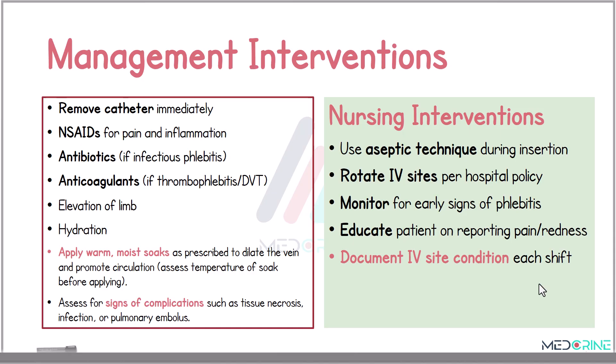Effective management starts with immediate catheter removal, provision of non-steroidal anti-inflammatory drugs for pain and inflammation. Antibiotics can be administered if infection is present, and anticoagulants are used if thrombophlebitis or deep venous thrombophlebitis is diagnosed. Supportive care includes limb elevation, maintaining hydration, and applying a warm moist soak to promote circulation.